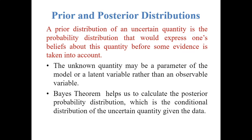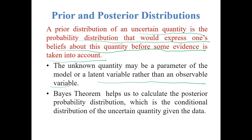A prior distribution of an uncertain quantity is the probability distribution that expresses one's belief about this quantity before some evidence is taken into account. The unknown quantity may be a parameter of the model or a latent variable rather than an observable variable. Bayes' theorem helps us to calculate the posterior probability distribution, which is the conditional distribution of the uncertain quantity given the data.